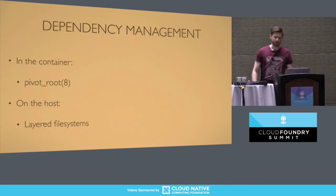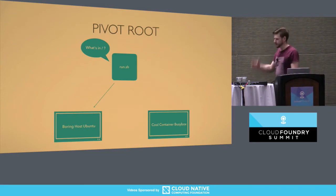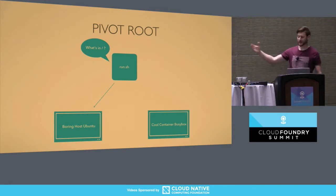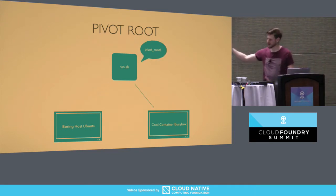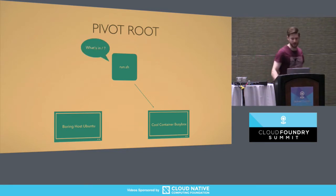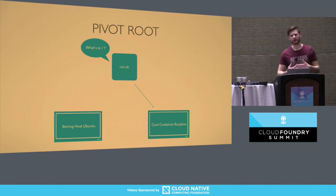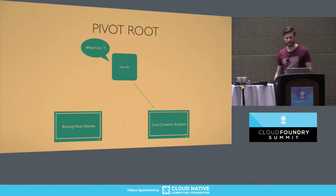Moving on — we did confinement, let's talk dependency management. In the container, we manage this via the system call called pivot_root. On the host, we can talk about layered file systems. Pivot_root is a system call that allows you to change what a process sees in slash at its root directory. We've got a process — it says what's in slash, gets back boring host Ubuntu files, then runs pivot_root, passing in a new directory that's really just a directory on top of a file system tree. Now when it asks what is in slash, it gets the cool container BusyBox file system. That's how Docker images starting with 'FROM Ubuntu' or 'FROM Alpine' can run on any host and still get that distribution's dependencies in the root file system.